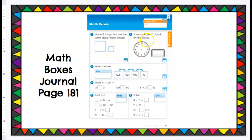Show half past 11 o'clock on this clock. You're gonna write it with both the analog and the digital, and then we have a frames and arrows here and they're saying what's my rule?